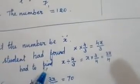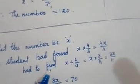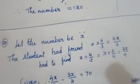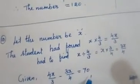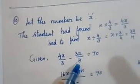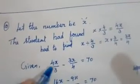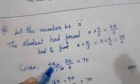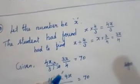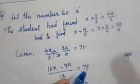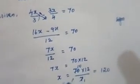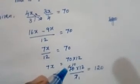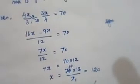So: 4x/3 − 3x/4 = 70. Using cross multiplication for LCM of 3 and 4 (LCM = 12): (4×4x − 3×3x)/12 = 70, so (16x − 9x)/12 = 70, giving 7x/12 = 70. Transpose: 7x = 70×12/7 = 840/7; since 7×10=70, we get x = 10×12 = 120. Therefore the number is 120.